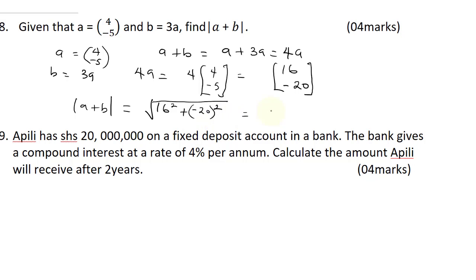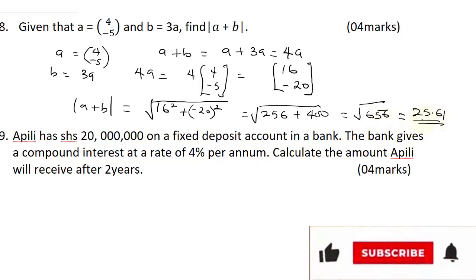So this is going to be 16 squared, it's going to give us 256. So this will be 256 plus 20 squared, it's going to be 400. This will be square root of, when you sum these two numbers up, you're going to get 656. And square root of 656 is going to give you 25.61. So our final answer is 25.61.